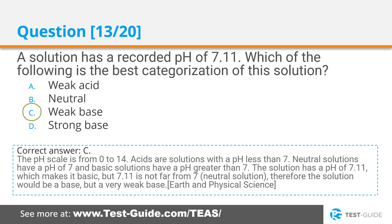The correct answer is C. The pH scale is from 0 to 14. Acids are solutions with a pH less than 7. Neutral solutions have a pH of 7. Basic solutions have a pH greater than 7. The solution has a pH of 7.11, which makes it basic. But 7.11 is not far from 7, which is a neutral solution. Therefore, the solution would be a base, but a very weak base.